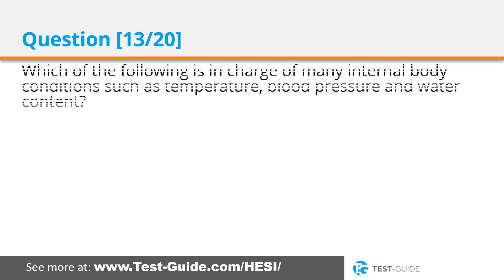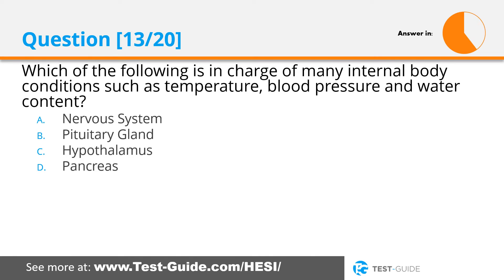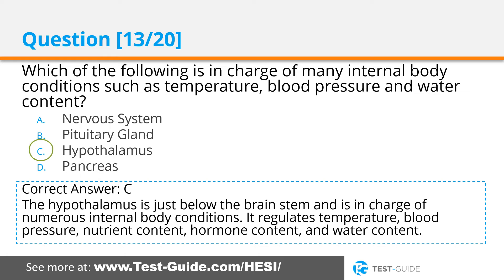Question thirteen: Which of the following is in charge of many internal body conditions such as temperature, blood pressure, and water content? Options: nervous system, pituitary gland, hypothalamus, pancreas. Correct answer C. The hypothalamus is just below the brain stem and is in charge of numerous internal body conditions. It regulates temperature, blood pressure, nutrient content, hormone content, and water content.